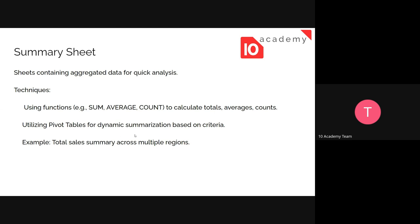We can also utilize pivot tables for dynamic summarization based on criteria — for example, total sales summary across multiple regions. Instead of dealing with every individual detail, if we're doing research on the sale of a specific product in different countries, we might go into house-to-house or person-to-person details during analysis. But when we take a summary, we can talk generally about that region — this number indicates the general situation of that market in that specific region.